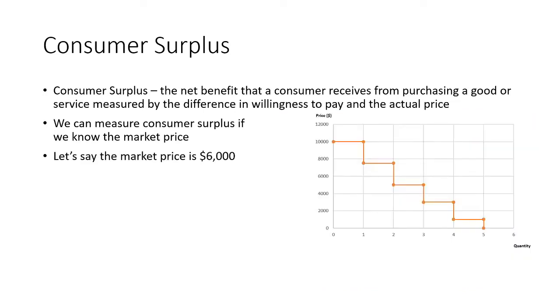We go back to our Jason Bourne example. We say the market price for a ride from Brussels to Paris is $6,000. We can draw a line here at $6,000 — that's our market price.